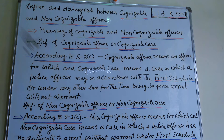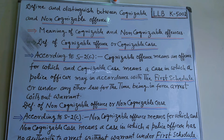First, the definition of cognizable offense or cognizable case. According to Section 2(c), a cognizable offense means an offense for which, and a cognizable case means a case in which, a police officer may, in accordance with the First Schedule or under any other law for the time being in force, arrest without warrant. This is a very serious type of case.